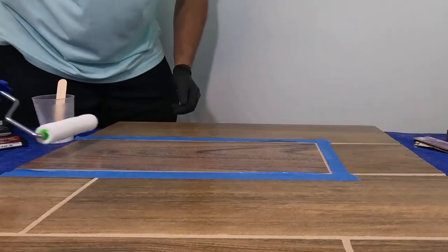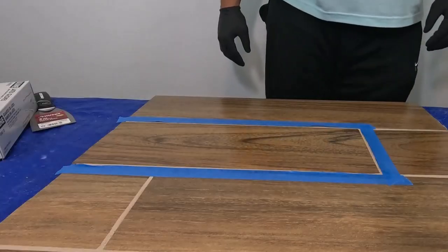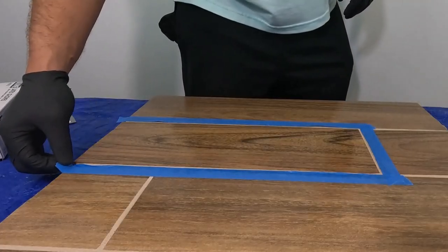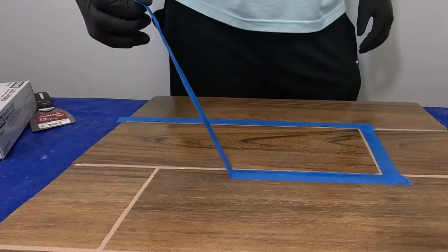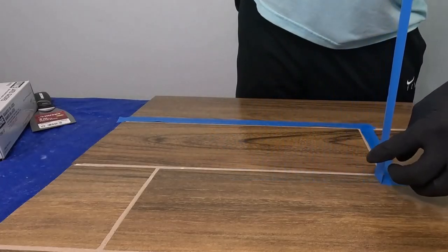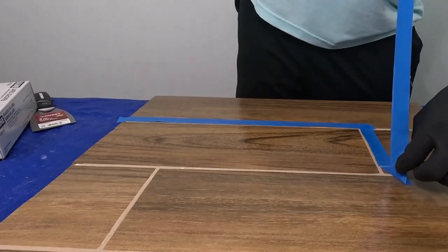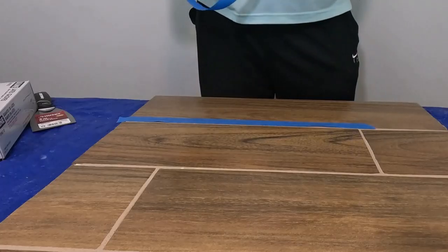As soon as you've applied the sealer, it's important to pull the tape. We don't want to leave lines where the sealer has gone over the blue tape. Pull the tape and feather out any lines you see so everything blends in.